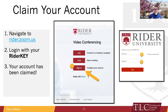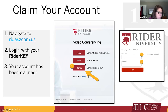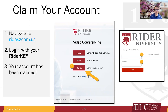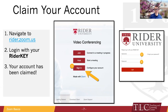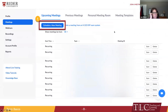For those who have never created a Zoom meeting with the Rider University license, one of the first things you'll want to do is claim your Zoom license through Rider. You just go to the rider.zoom.us website — that's Rider's hosting URL — at which point you'll see a sign-in button. It will bring you to a familiar login page where you use your Rider Key credentials — your Canvas username and password.